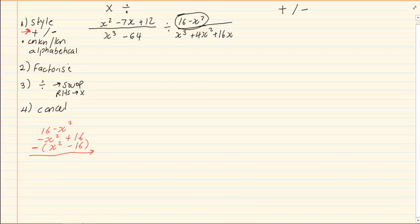Now, our style is correct. Then we go on to factorize. If we factorize x squared minus 7x plus 12, we have x minus 4, x minus 3. All over factorizing x cubed minus 64, giving us x minus 4 into x squared plus 4x plus 16.